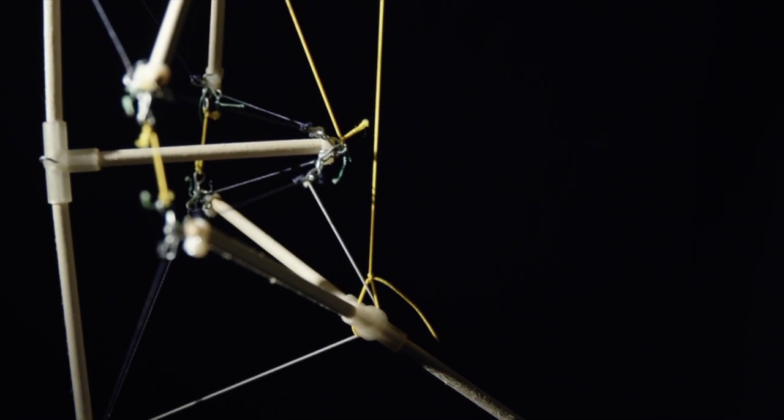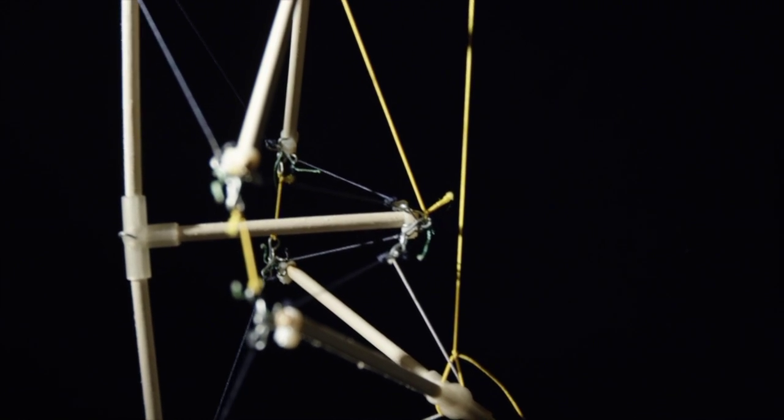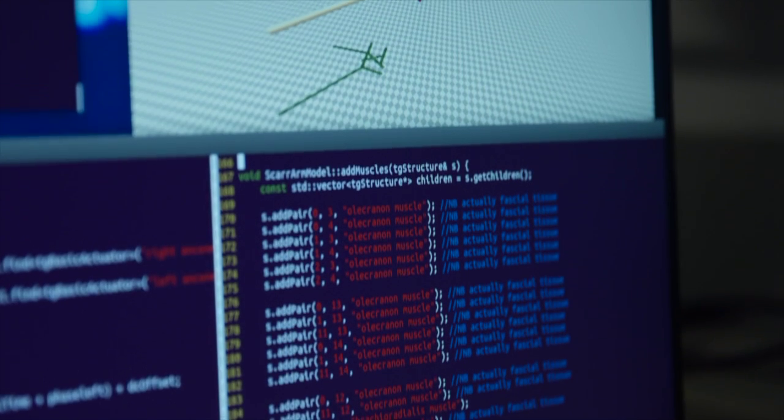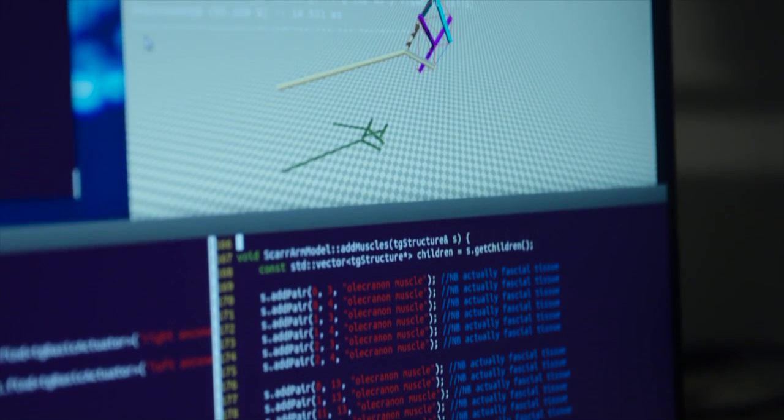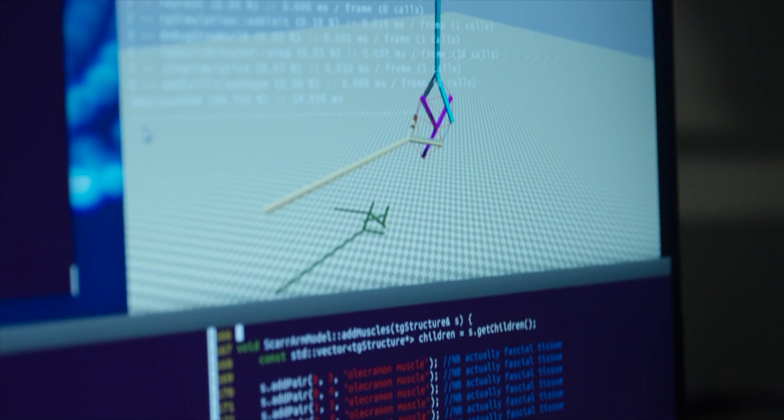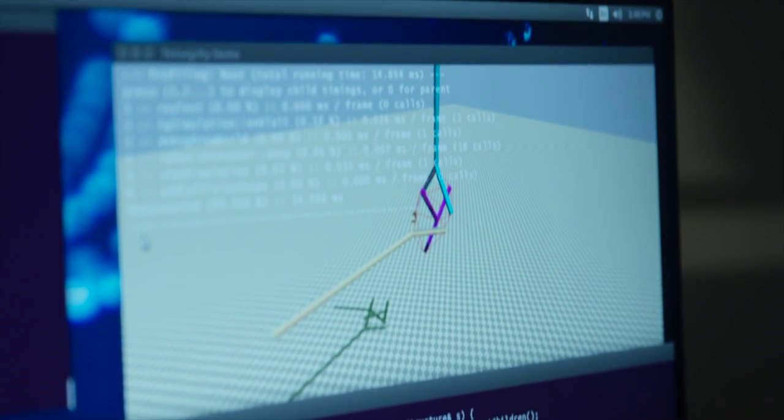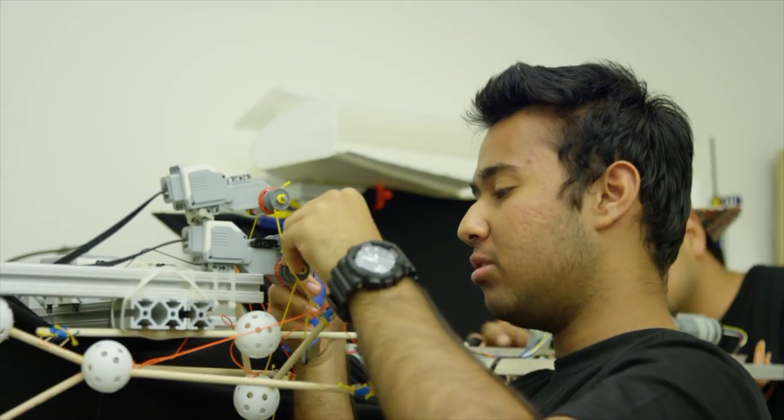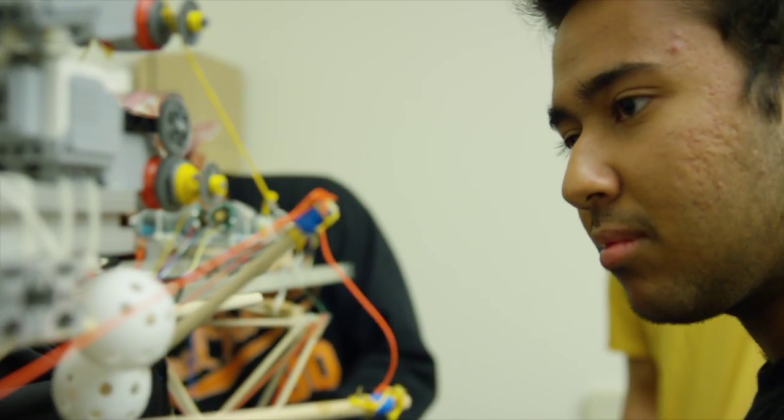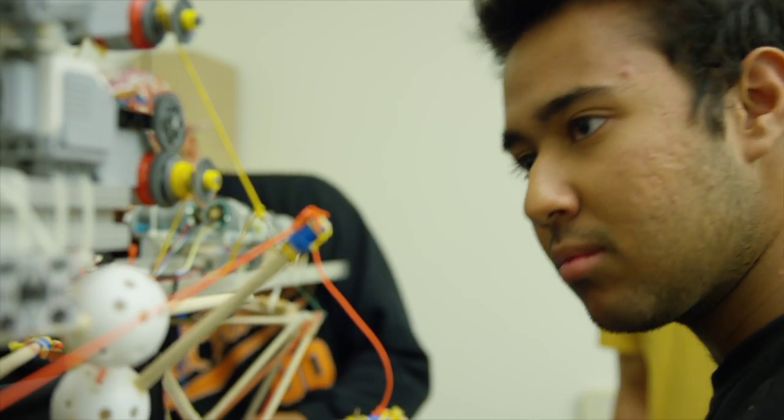We begin with a passive prototype. We figure out how that passive structure should be assembled by first modeling this within NTRT, which is an in-house simulator we've developed in conjunction with NASA Ames as well as a few other academic institutions around the country. We get a better understanding of the underlying mechanics behind structures we want to build, and once we have a good idea of how these structures will behave, we test these hypotheses through the passive structures and eventually through actuated structures as well.